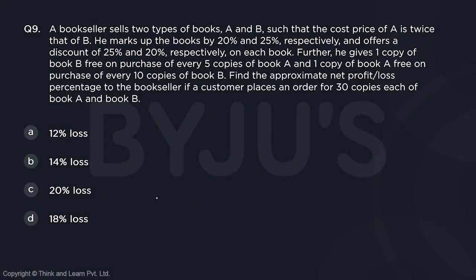The question says: a bookseller sells two types of books A and B such that the cost price of A is twice that of B. He marks up the books and offers a discount. Further, he gives some copies free on every purchase of copies of A and B. What is the net profit or loss when there are 30 copies of A and B ordered?